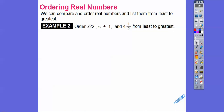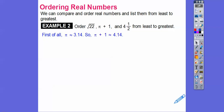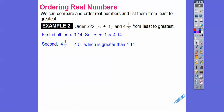Let's order these numbers: √22, π + 1, and 4.5. I'm going to change them all to decimals and guesstimate. Pi is approximately 3.14, so π + 1 ≈ 4.14. And 4.5 as a decimal is just 4.5. So 4.5 is definitely greater than 4.14.